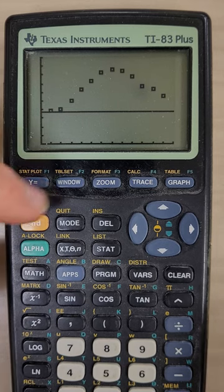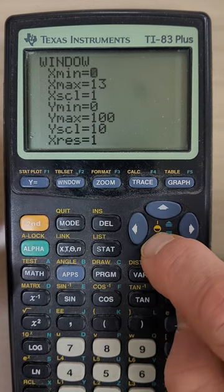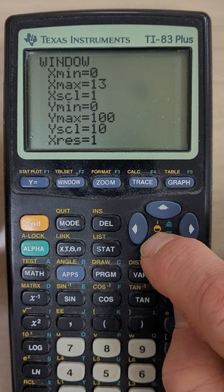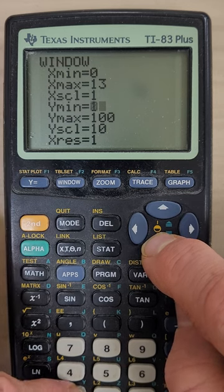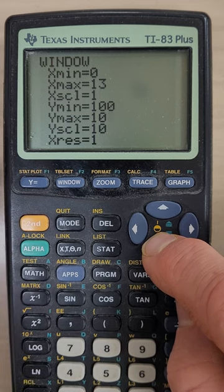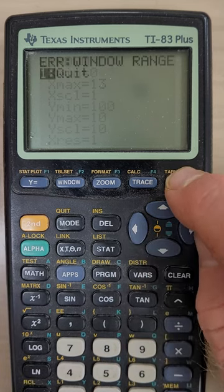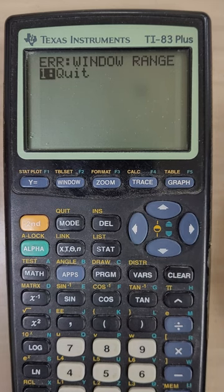And if you got any type of errors, it could be that your window was mistyped. What's a common way to mistype a window? Somebody like reverses the minimum and the maximum. So if my minimum and maximum is messed up, I'm going to get a window range error.